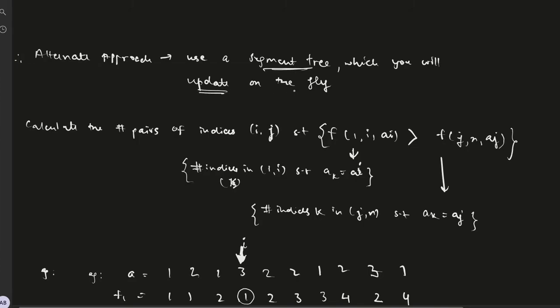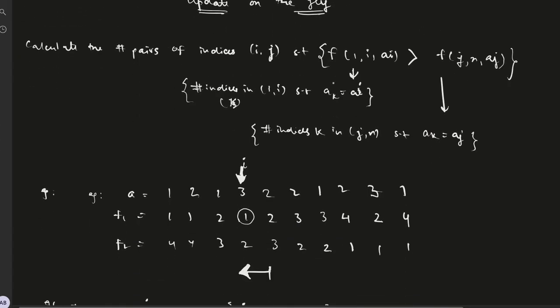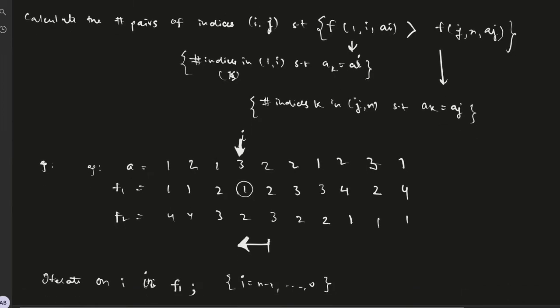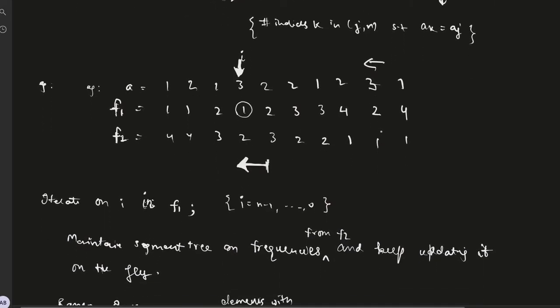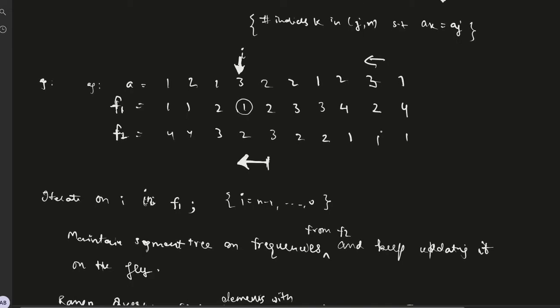How we go about doing this is, first as we had done in the first approach, maintain these two arrays f1 and f2. Then iterate on f1 from right to left.